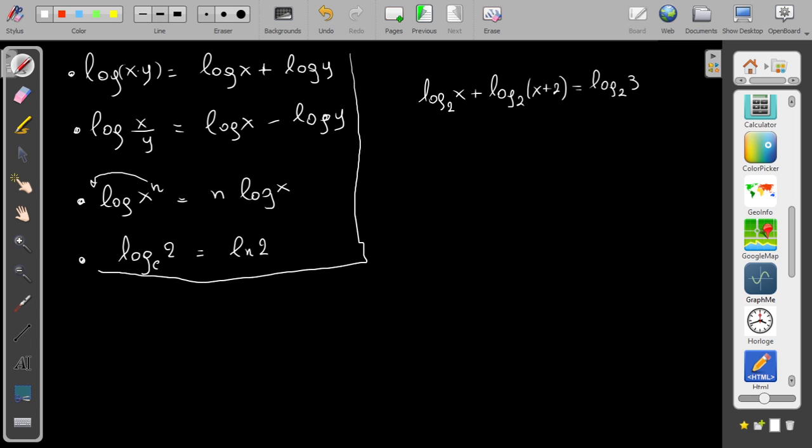So you see here I have logarithm plus another logarithm with the same base, so basically I have this property, this law. So I can go back, I can use the inverse. So basically this one will be log₂ of x times the other one, x+2.